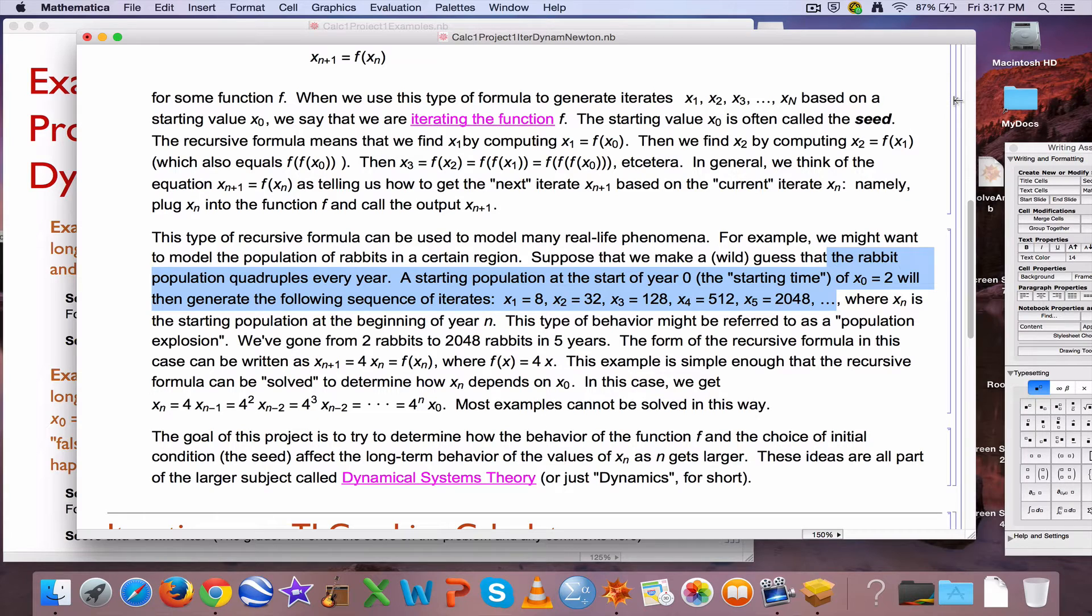The initial value that you start with is called the seed, and the values that you get x1, x2, x3 after iteration are called the iterates, and the entire set is sometimes called the orbit, sort of emphasizing the dynamical nature, the motion of the points along a number line.